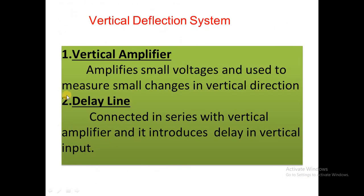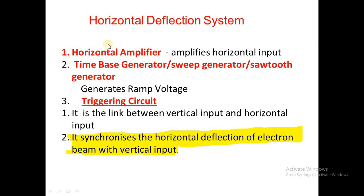The second major component of the CRO is the vertical deflection system, which is divided into two parts: vertical amplifier and delay line. The vertical amplifier amplifies small voltages and is used to measure small changes in the vertical direction. The delay line is connected in series with the vertical amplifier and introduces a delay in the vertical input.